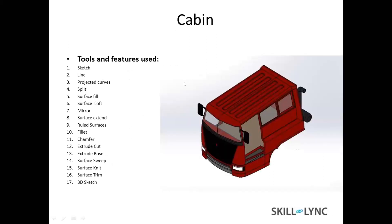This is the cabin. These are the tools and features used to make it. This is where the control of the entire truck is, from acceleration to controlling the dump bucket.